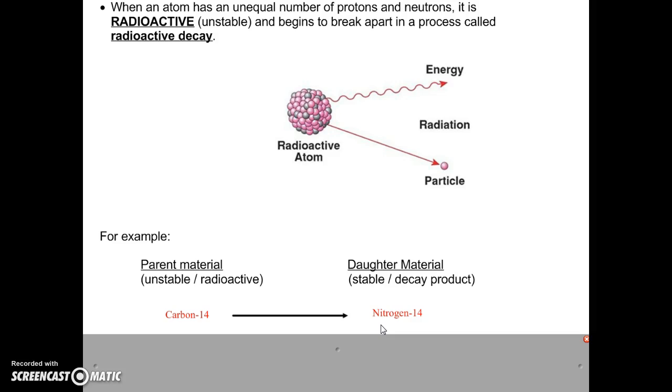We have a lot of different words that we use for these. So the carbon-14, we can call it unstable, we can call it radioactive. We also refer to it as the parent material. The thing that it turns into is called the daughter material or the stable product or the decay product. They are all synonymous, they all mean the same thing.